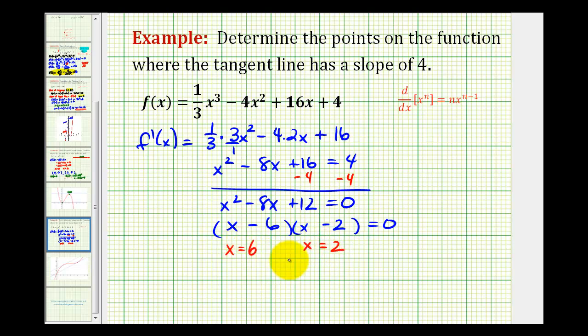So again, these are the x-coordinates to the points where the tangent line will have a slope of four. So now to determine the y-coordinates of these points, which are points on the function, we need to determine f of six and determine f of two.